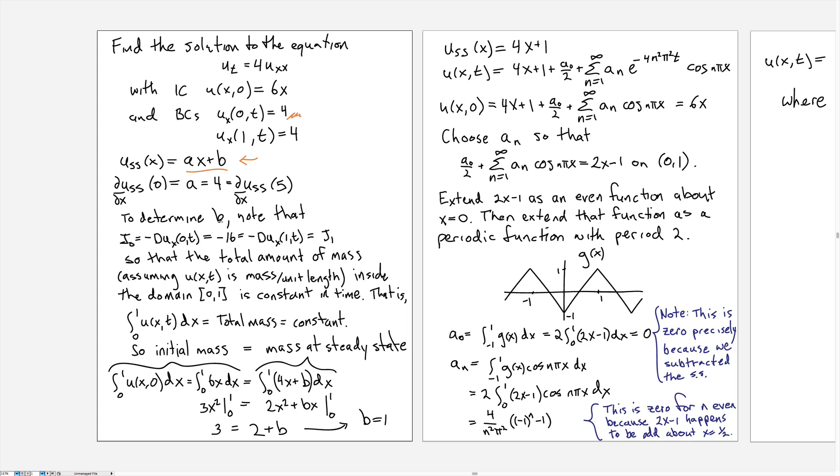And so the tricky part though is to calculate b. Now remember that the flux at either end has to be equal, so that means that the total amount of mass inside the domain between 0 and 1 is constant in time.